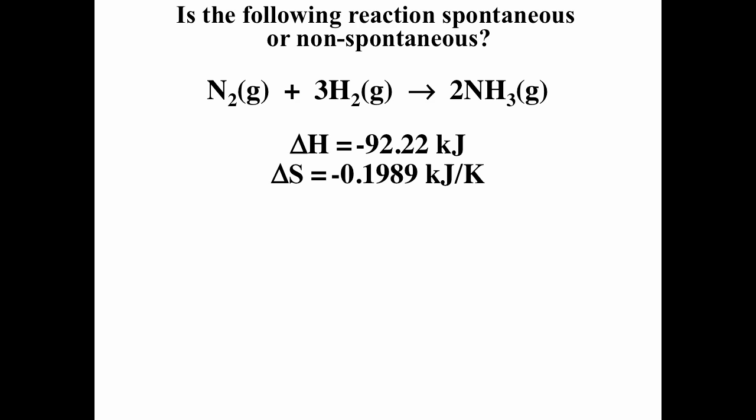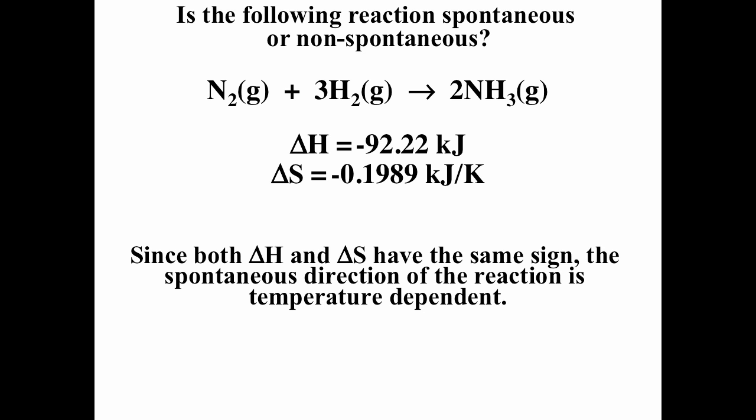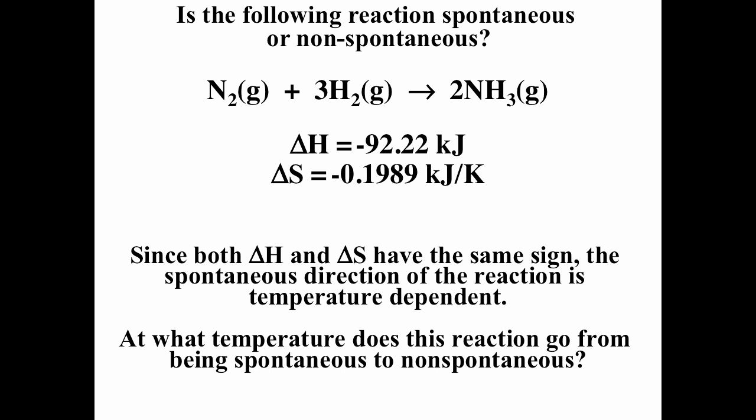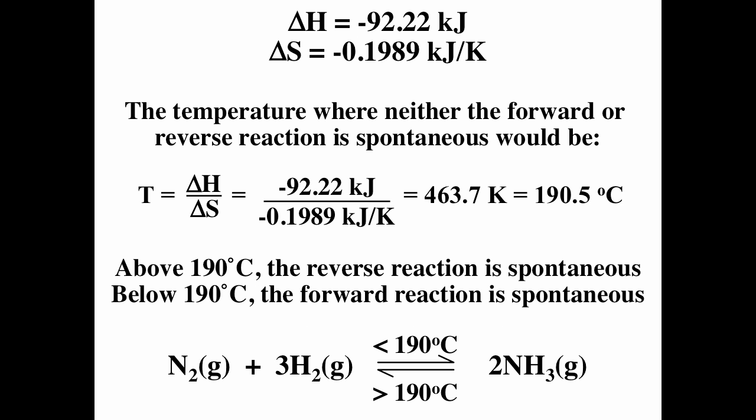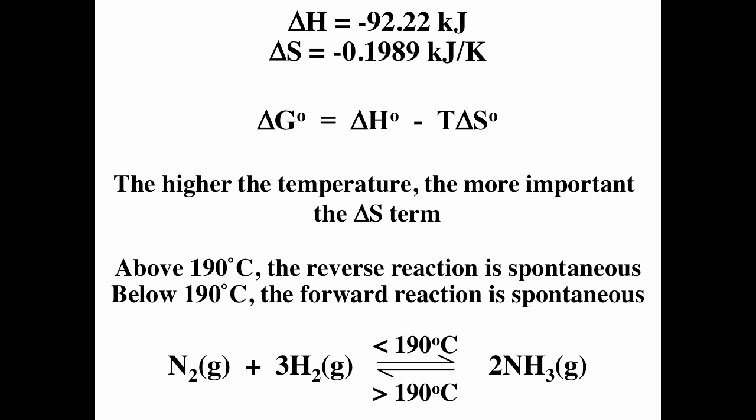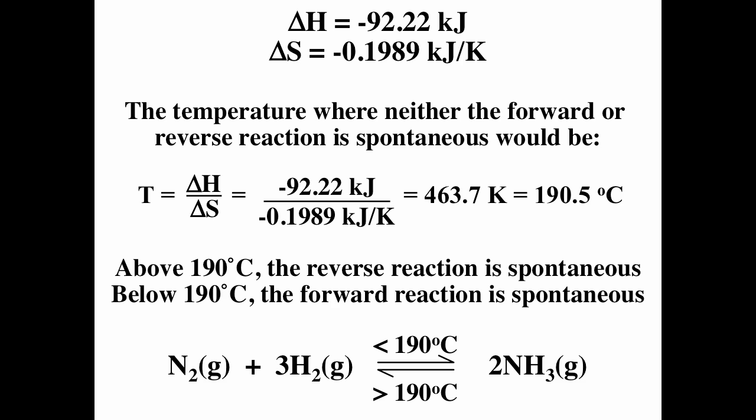For another example, given ΔH and ΔS with the same sign, the spontaneity of the reaction depends on temperature. Using T = ΔH / ΔS and carefully canceling units, converting ΔS to kJ, we calculate the transition temperature as 463.7 K, which equals 190.5°C. That is the transition temperature: above 190°C the reverse reaction is spontaneous, and below 190°C the forward reaction is spontaneous. The higher the temperature, the more important the ΔS term; since ΔS is negative, higher temperatures lead to a non-spontaneous reaction.